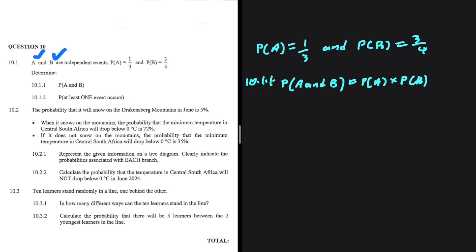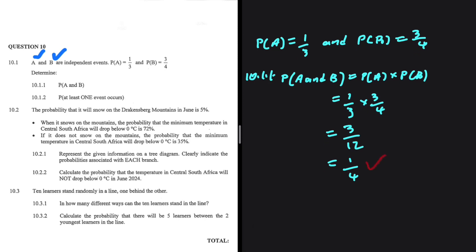A and B are independent events, so we're going to have 1 divided by 3 — the probability of A — multiplied by 3 divided by 4, the probability of B, giving us 3 divided by 12, which is just 1 divided by 4. This is the probability of A and B for 10.1.1.